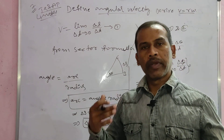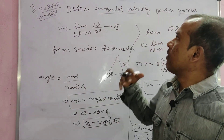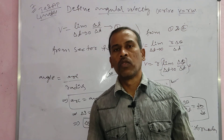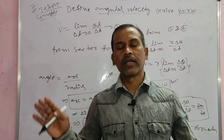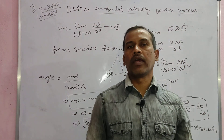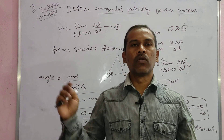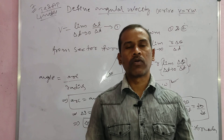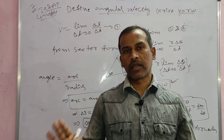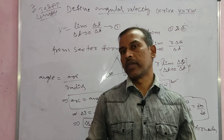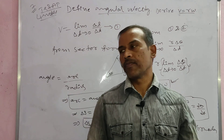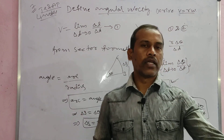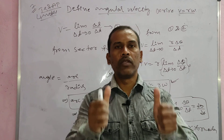This is one of the repeated questions in IPE. Define angular velocity and derive V is equal to r omega. Other important topics in the system of particles and rotational motion chapter include: center of mass, center of gravity, tau equals I alpha, law of conservation of angular momentum, parallel axis theorem, and perpendicular axis theorem. These questions are very important. Thank you, all the best students.